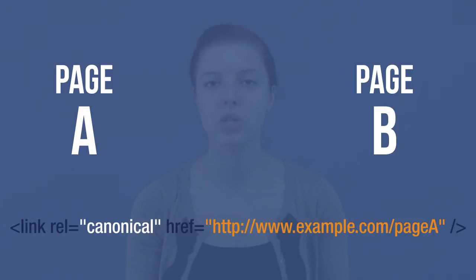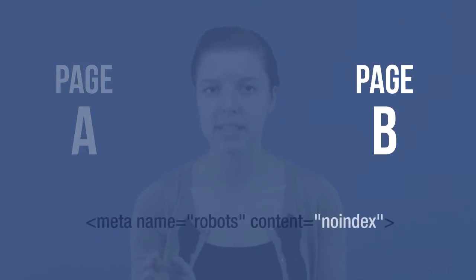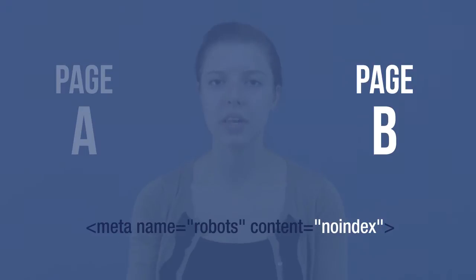Then what you'd want to do on page B is put in the meta robots noindex tag. You want to noindex this because it's similar enough to the first page that it won't affect the user experience if they can't find it in the search engine, but they can still find it online. You want to use the meta noindex because the canonical is just a suggestion, and using the noindex makes it more of an absolute for Google. So all you do is copy that onto page B in your header tag. It's very simple and straightforward. And that's it — hope you enjoyed.